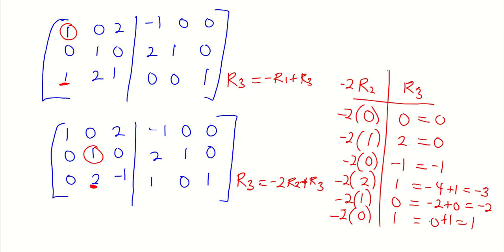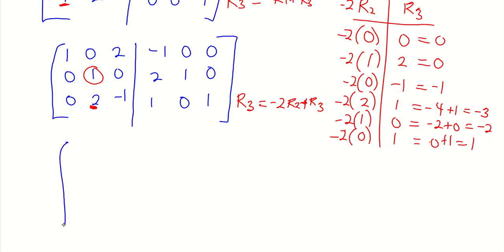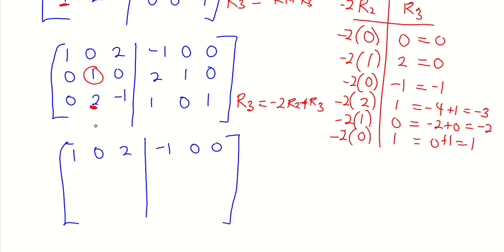Since the effect does not happen in row 1 and row 2, we maintain their values. Row 1: 1, 0, 2, minus 1, 0, 0. Row 2: 0, 1, 0, 2, 1, 0. New row 3: 0, 0, minus 1, minus 3, minus 2, 1.